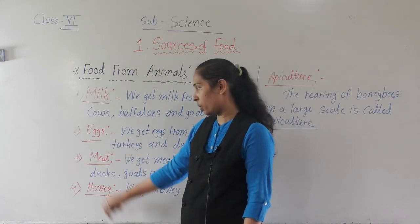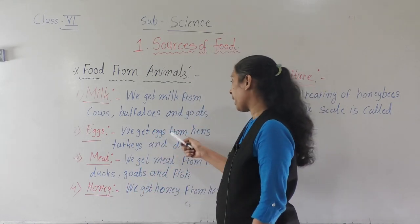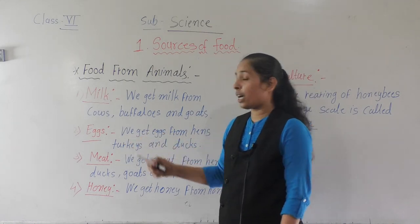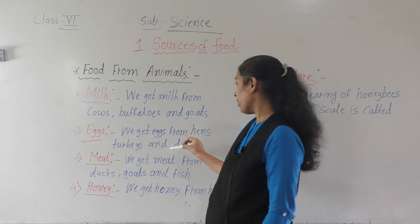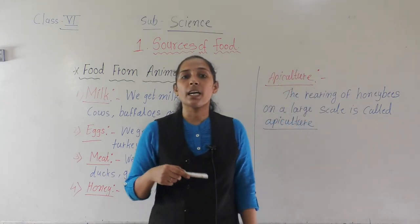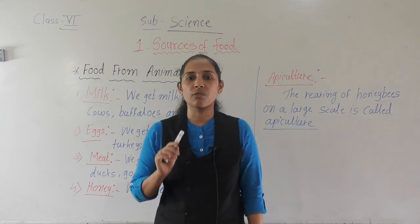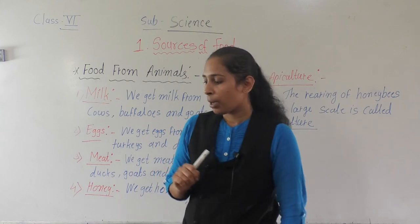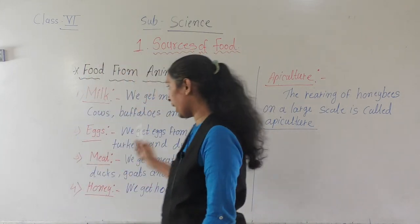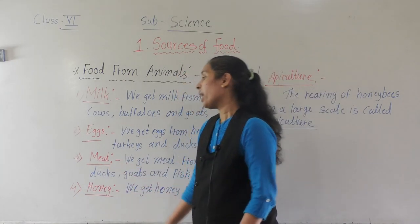The next food item we get from animals is eggs. We get eggs from hens, turkeys, and ducks. Eggs help to build our body and are a very good source of vitamins and proteins.